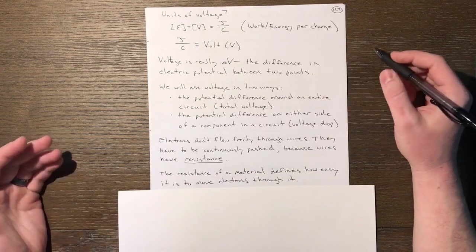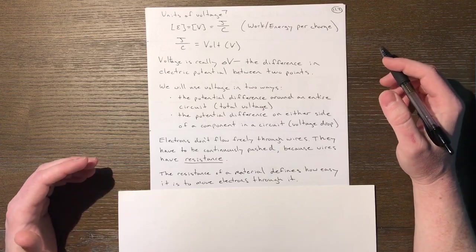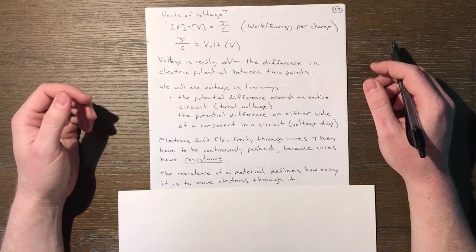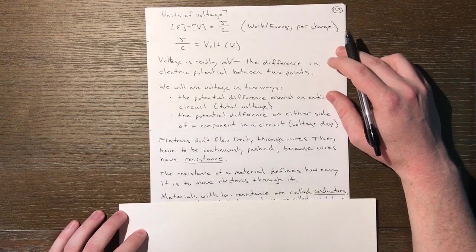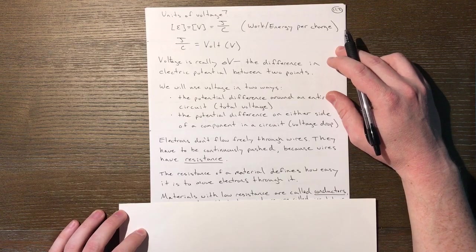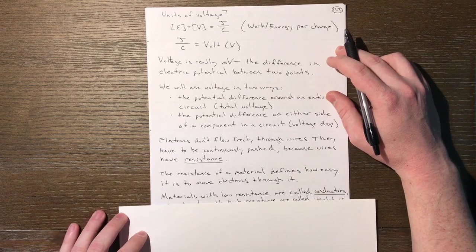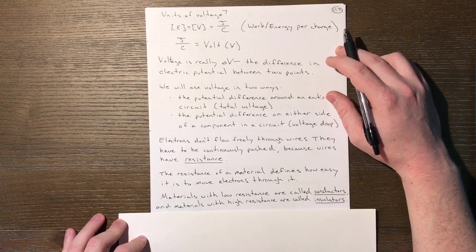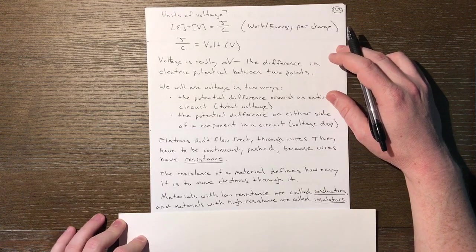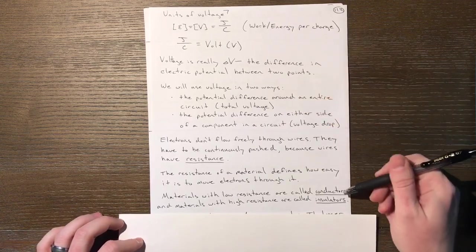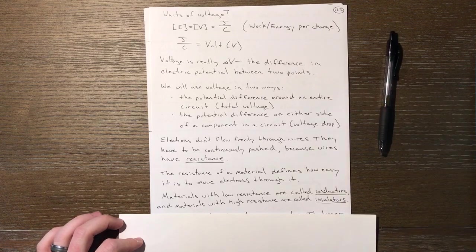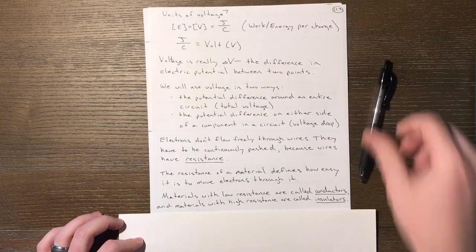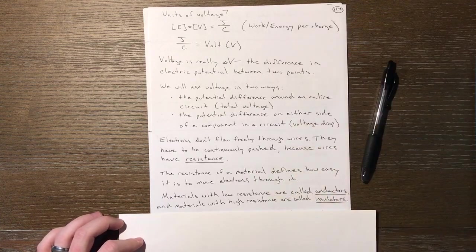Resistance of a material defines how easy it is to move electrons through it. Materials with low resistance are called conductors because they conduct electricity well. Materials with high resistance are called insulators—it's not easy to get electricity to flow through them. Wires are generally a combination: something like copper or gold, a conductor inside, wrapped with rubber, an insulator, keeping charge in place.